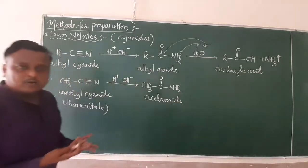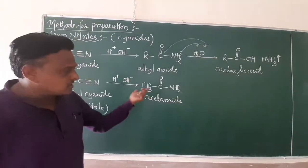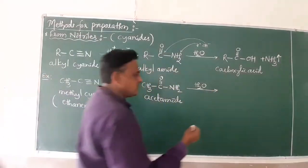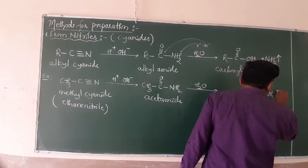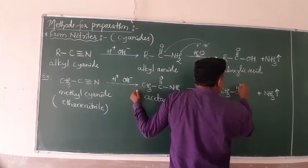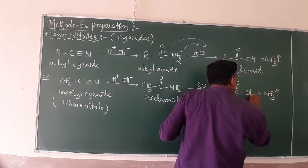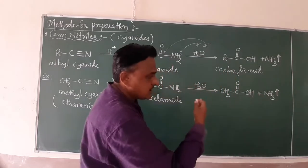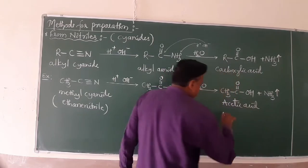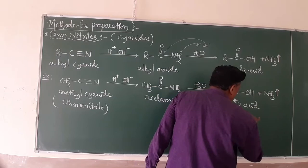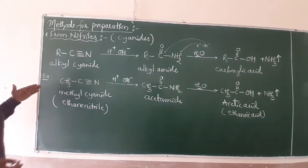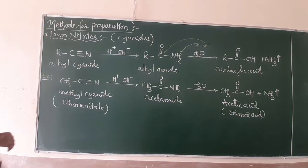Ethane nitrile undergoes further hydrolysis with H⁺ and OH⁻. Ammonia gas is released as NH₃. What remains is CH₃-C double bond O-OH. This is acetic acid, commonly called acetic acid. The IUPAC name is ethanoic acid. This is the simple preparation of carboxylic acid from nitriles.